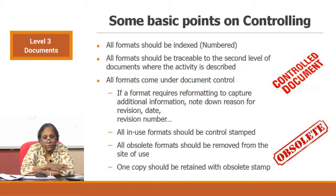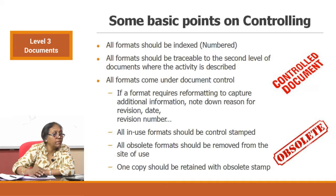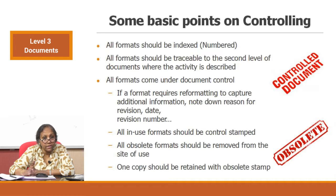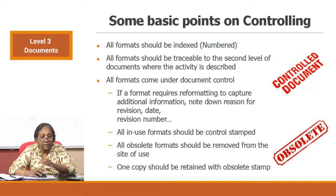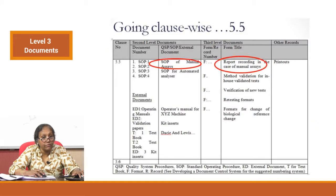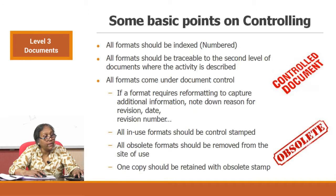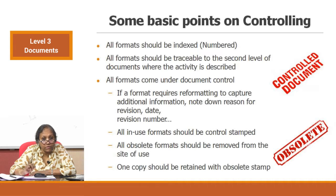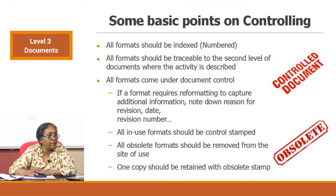Some basic points on controlling documents — we will talk about document control in more detail in the next session. At a minimum: all formats should be indexed and numbered (indexing is a document number and document name); all formats should be traceable to the Level 2 documents where the activity is described. Traceability can be demonstrated by making a chart tabulating your clause from Level 1, SOPs or QSPs from Level 2, and formats from Level 3. External records stored separately can use a different numbering system, but they should be traceable.